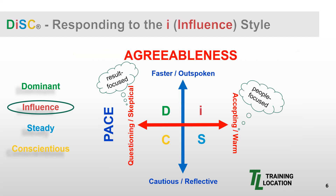With the focus on the I style, let's break down the pace and agreeableness model. The I and the D share a faster, outspoken pace. For agreeableness, the I and S share an accepting and warm agreeableness — people-focused. You might wonder about diagonal pairings — for example, the I and C relationship. This is where we begin to see interaction between dissimilar styles that share neither pace nor agreeableness.